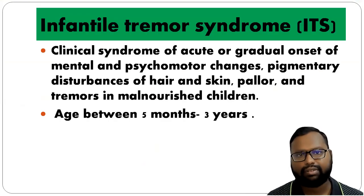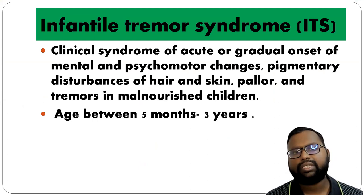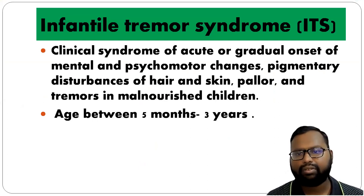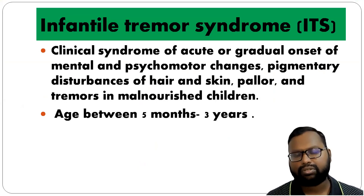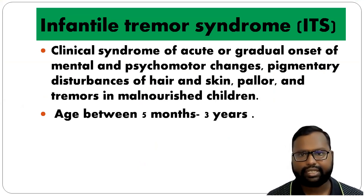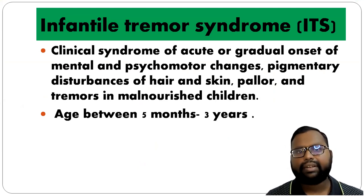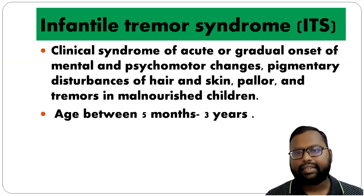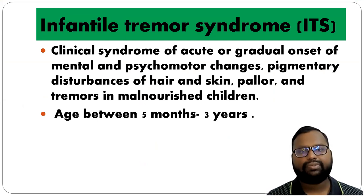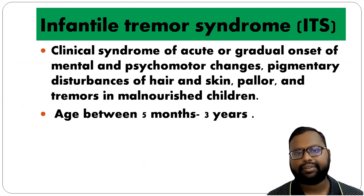The condition we call Infantile Tremor Syndrome. This is a clinical syndrome having acute or gradual onset with mental and psychomotor changes. There is pigmentary disturbance of skin and hair, pallor, and tremor in a malnourished child. The age group is between 5 months to 3 years.